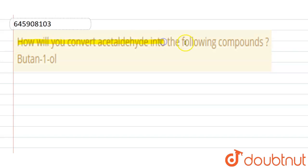Our question is: How will you convert acetaldehyde into the following compounds? That is butan-1-ol. Here we have to convert acetaldehyde into butan-1-ol.